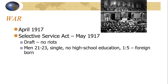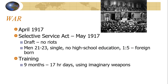The month later, they passed the Selective Service Act, which instituted a draft. There were no riots, mostly because it was a more equitable draft — unlike the Civil War, where you could buy your way out, you couldn't in World War I. The average person who served was a man, 21 to 23, single, with no high school education, and one out of five were foreign born. Training would last about nine months, with 17-hour days using imaginary weapons. We weren't supplied for war — we didn't even have enough weapons to send with our American Expeditionary Force as they went to Europe, let alone to train them with.